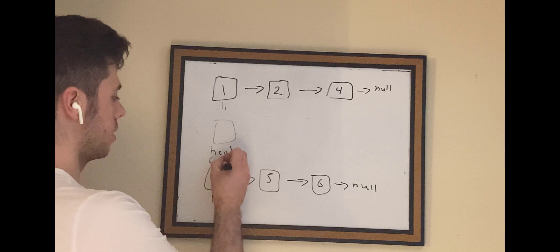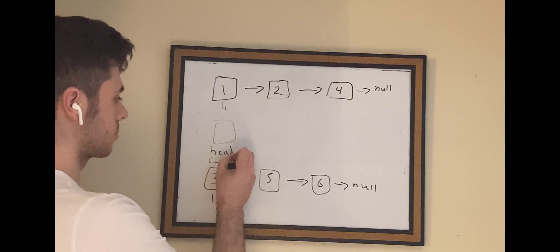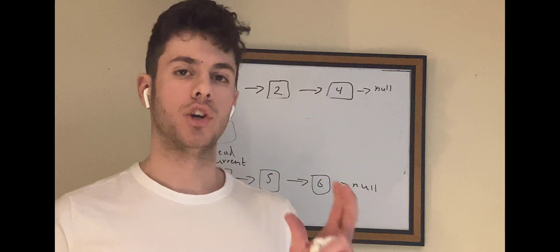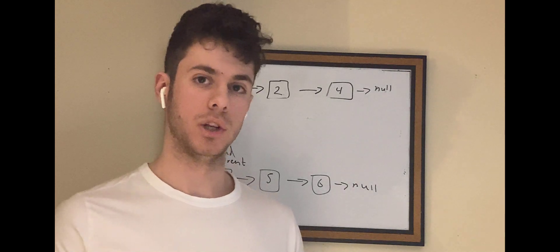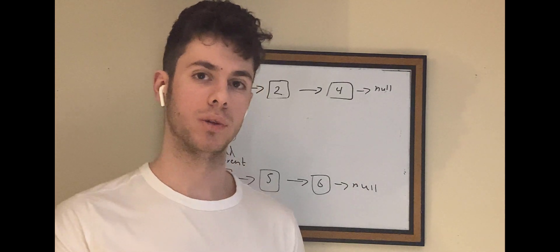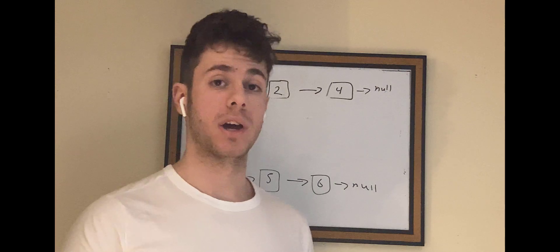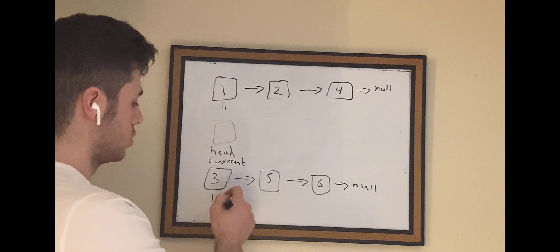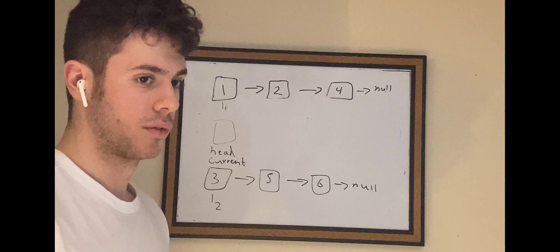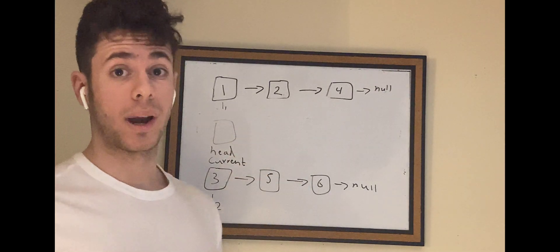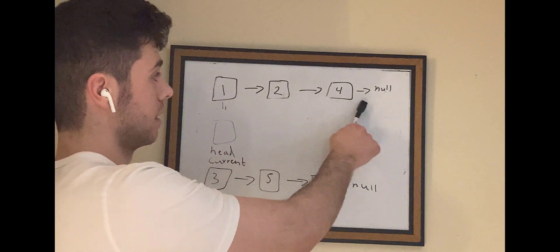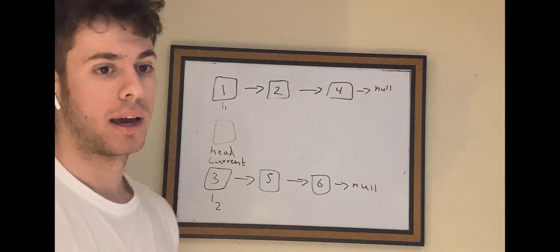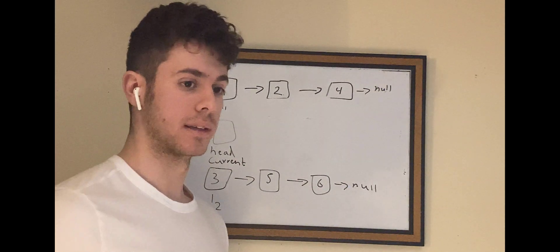We're also going to have another variable called current. Current is just the current node that we're at in our new linked list that we're creating — it lets us keep track of which node we're at. L1 and L2 are going to be the variables tracking which current node we're at in each respective list, and they're going to change as we traverse.